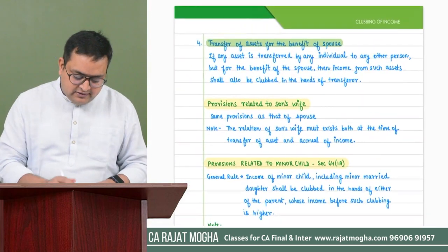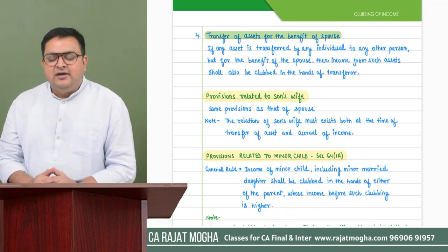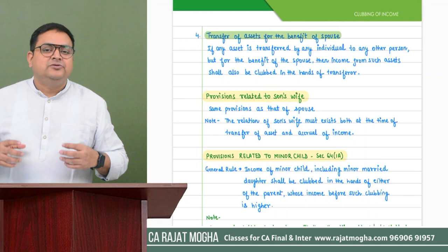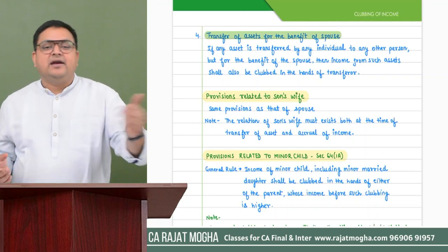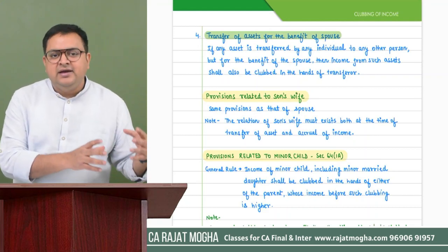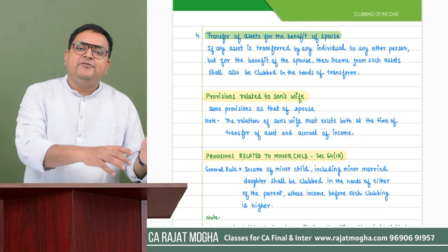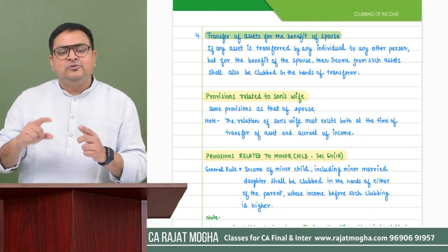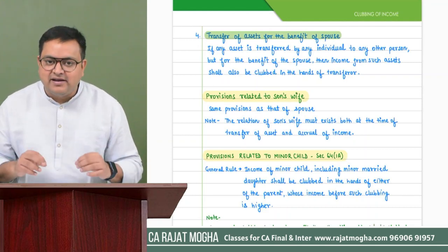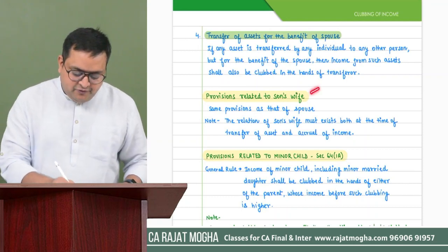People aware of clubbing provisions may try indirect transfers — creating an artificial entity and transferring assets to it, with all benefits going to the spouse. Such indirect transfers also attract clubbing provisions.